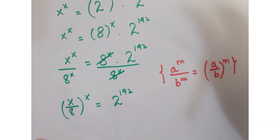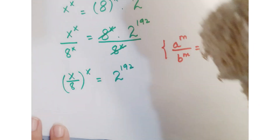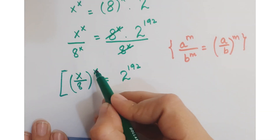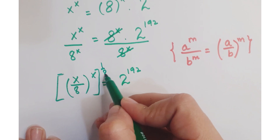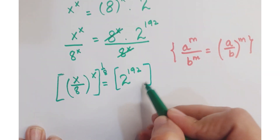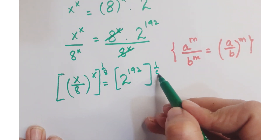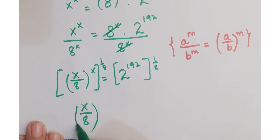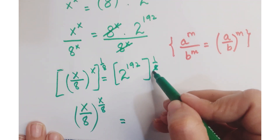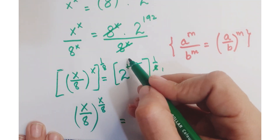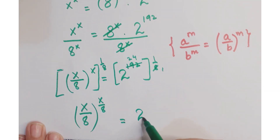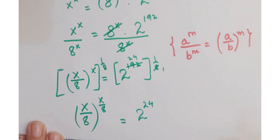Now, in order to make the same bases and same exponents, just take power 1 upon 8 on both sides. So here we get x upon 8 whole to the power x upon 8 is equal to — after cancellation, 192 divided by 8 gives 24 — so 2 to the power 24.